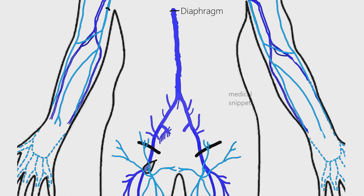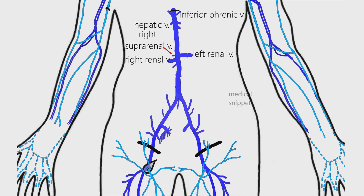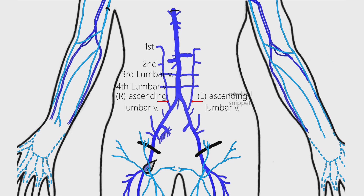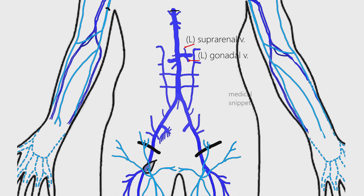The tributaries of the inferior vena cava are a pair of inferior phrenic veins, hepatic veins, a pair of renal veins, right suprarenal vein, right gonadal vein, and lumbar veins. The third and fourth pairs of lumbar veins drain directly into the inferior vena cava, while the first and second pair drains into the ascending lumbar vein. The left suprarenal vein and the left gonadal vein drain into the left renal vein.